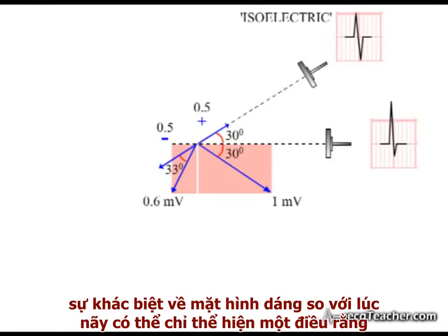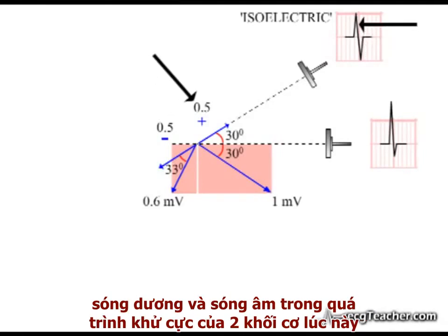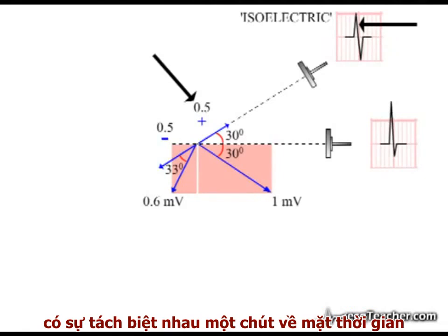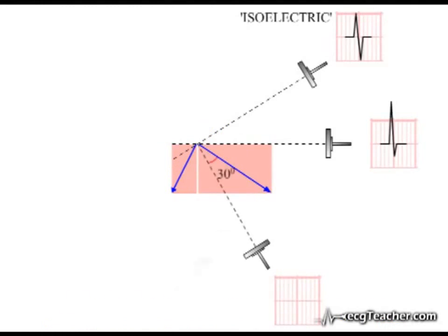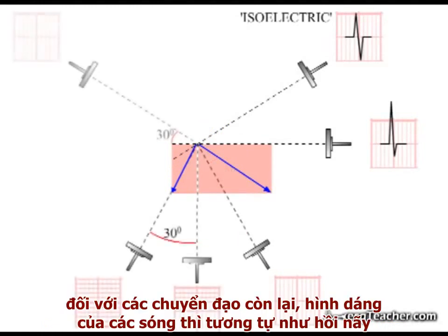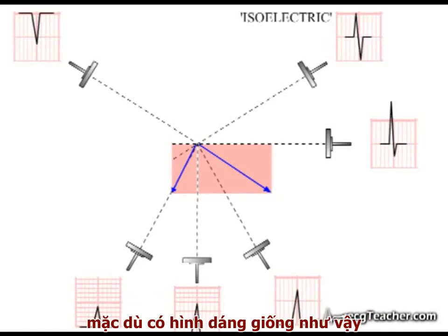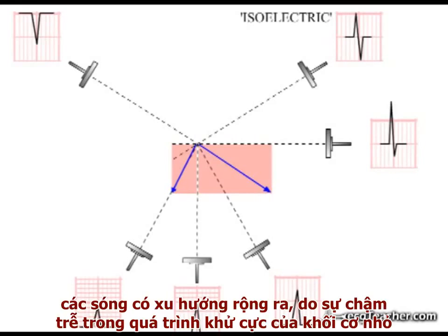The difference in morphology merely reflects the fact that the negative and positive components relative to this lead are now slightly separated in time. In this model, the morphology of the readouts in the remaining leads remains very similar to before, while the model complexes enclose the same area on the ECG paper — a reflection of the total voltages generated — but are widened due to the delay in the signal from the smaller section.